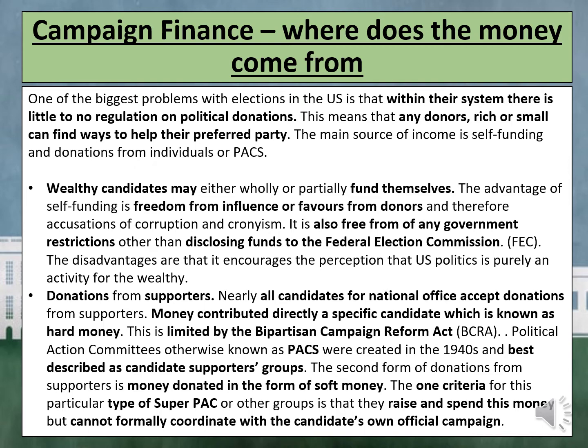Donations can also come from supporters. Nearly all candidates for national office accept donations from supporters. Money contributed directly to a specific candidate is known as hard money. This is limited by the Bipartisan Campaign Reform Act, or BCRA. No individual can donate more than $2,800 per annum directly to a single candidate's own campaign and no more than $35,000 to a national political party. However, there are ways around this. Political Action Committees, otherwise known as PACs, were created in the 1940s and are best described as candidate supporters groups. They can raise and distribute money to favoured candidates with a maximum donation of $5,000.